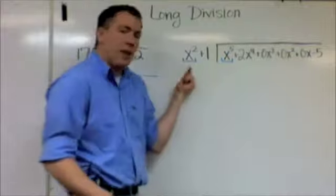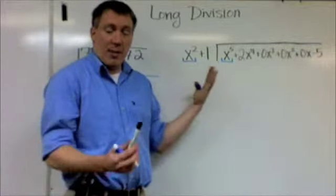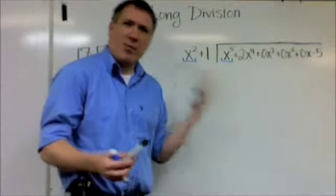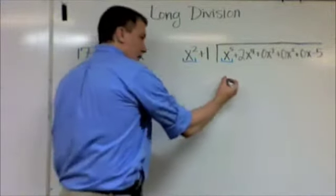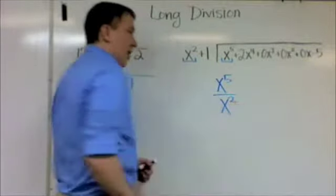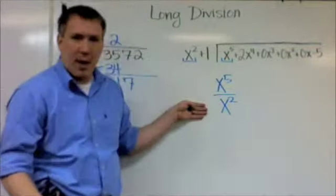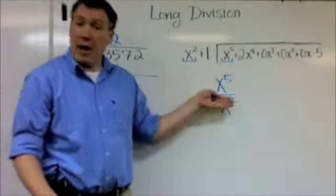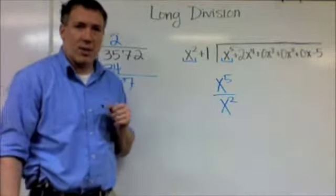The question is, how many times does x² go into x⁵? Well, that might seem like a confusing question. It's the same as saying, what's x⁵ divided by x²? If you remember, they have the same base, so I subtract the exponents. This would be x³.